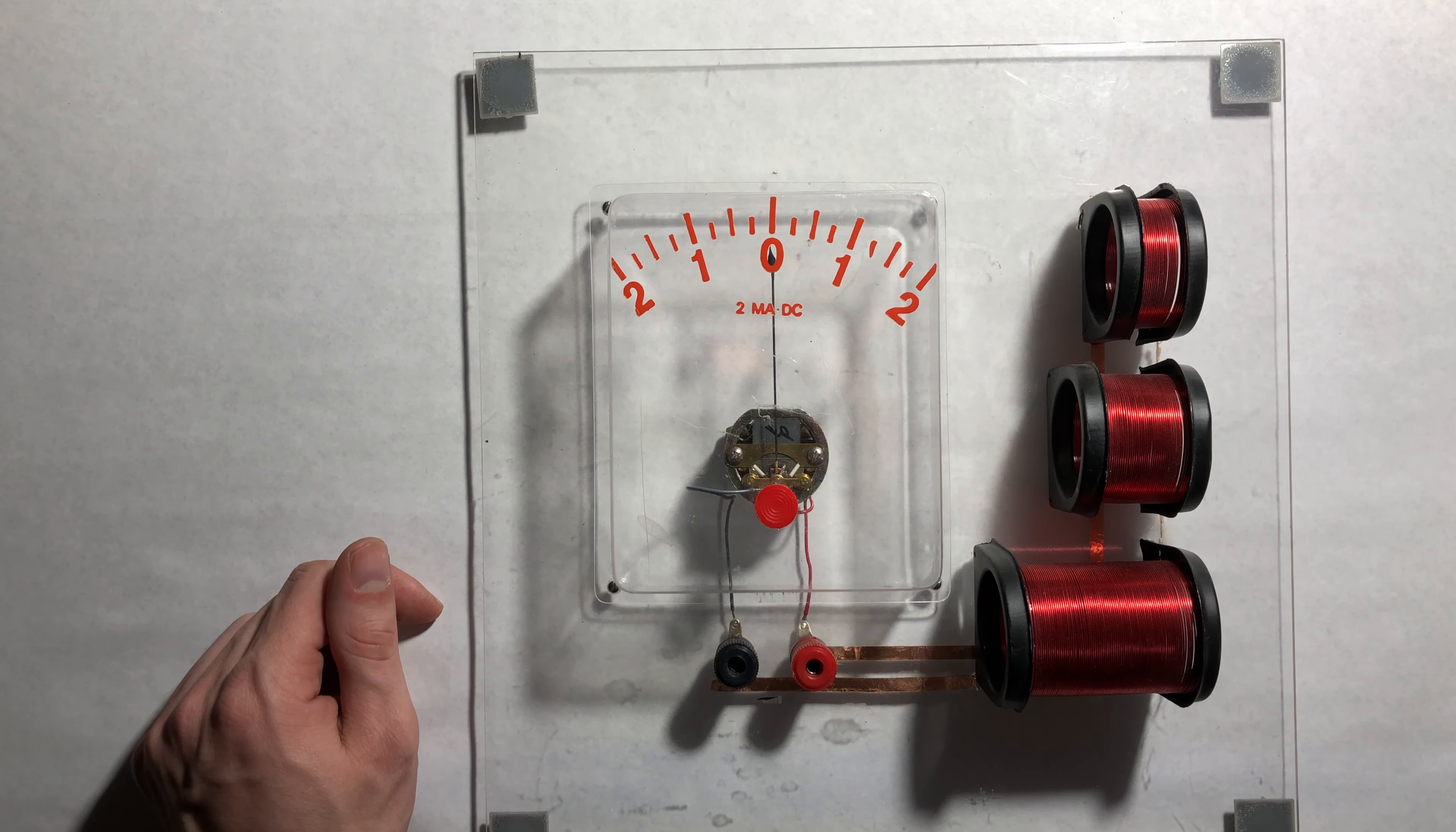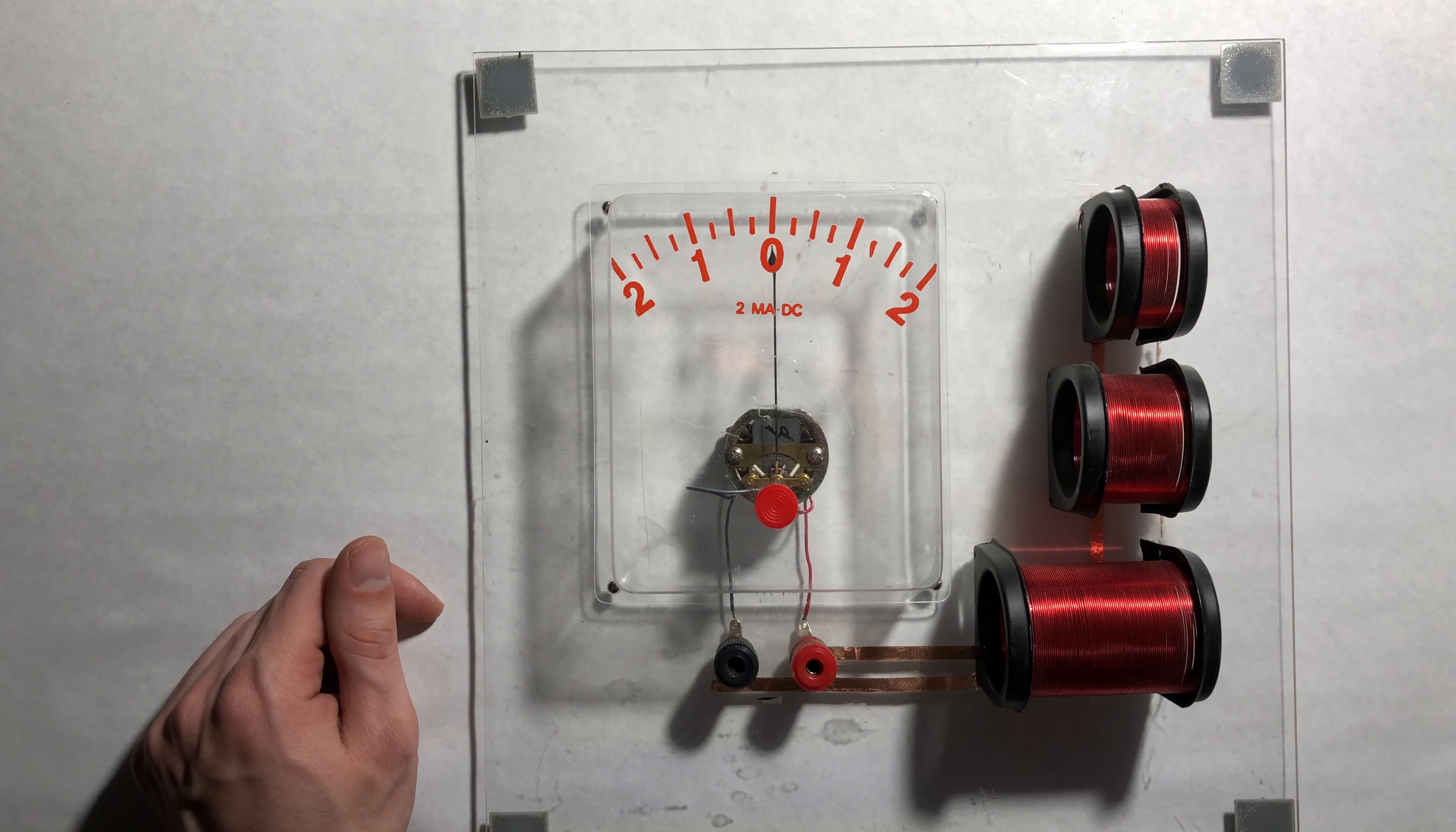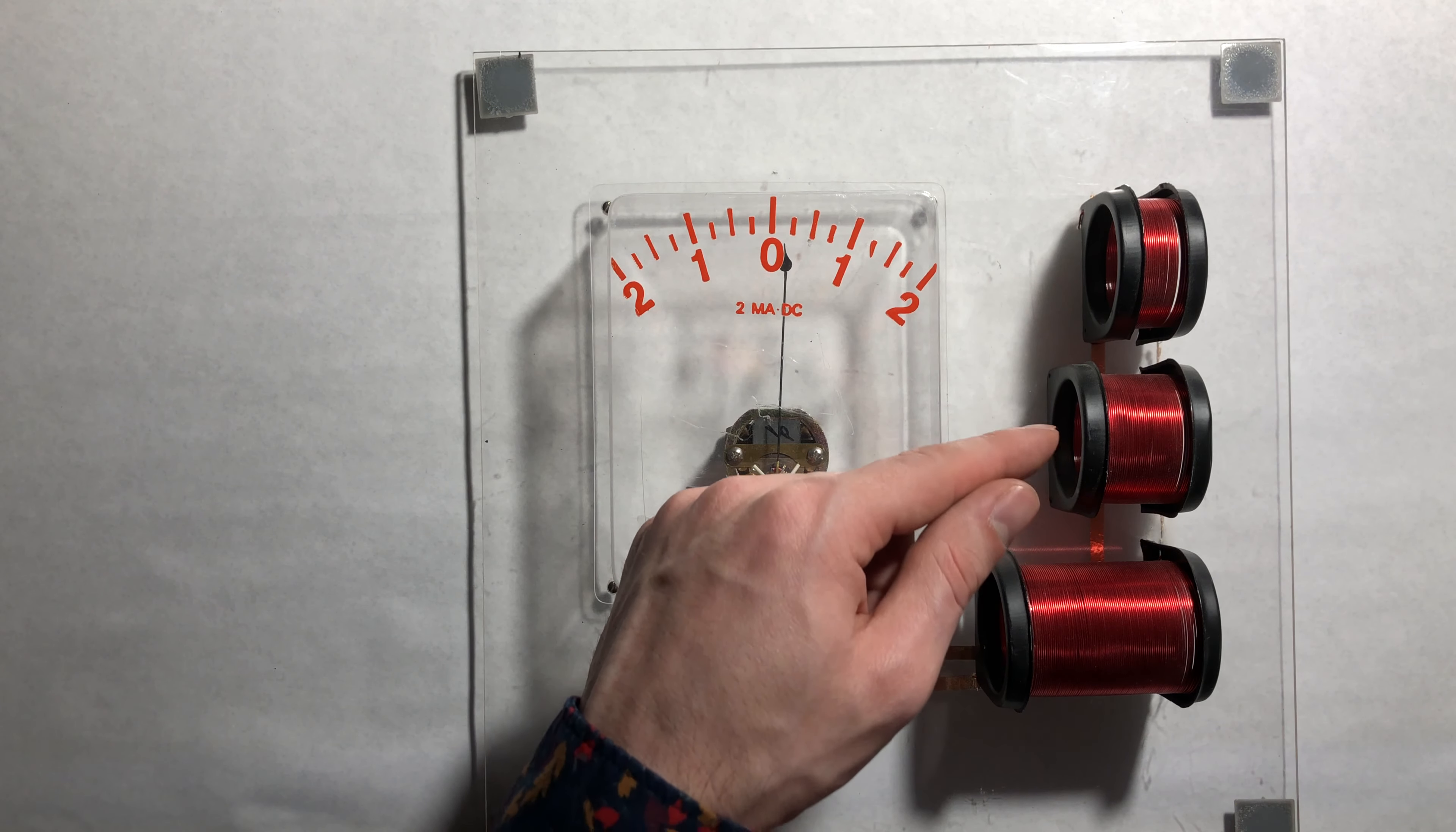Do you notice that as I insert the field lines or as I remove the field lines we're getting an opposite direction of current. So one of them must be creating clockwise current around here and one must be creating counterclockwise current around here.